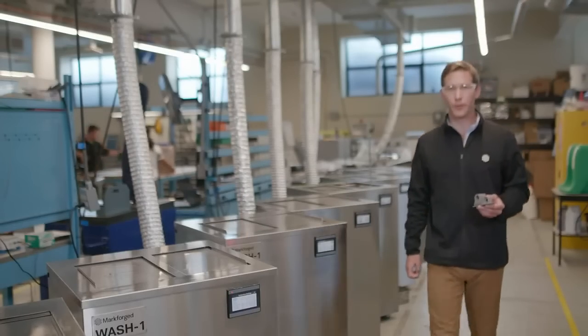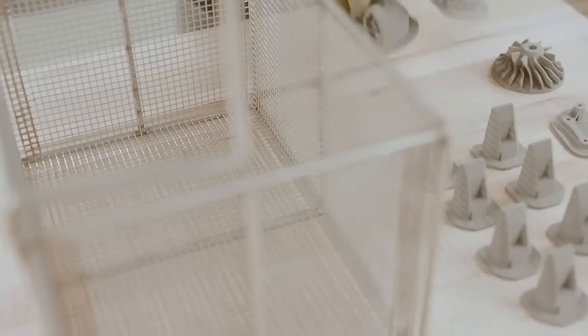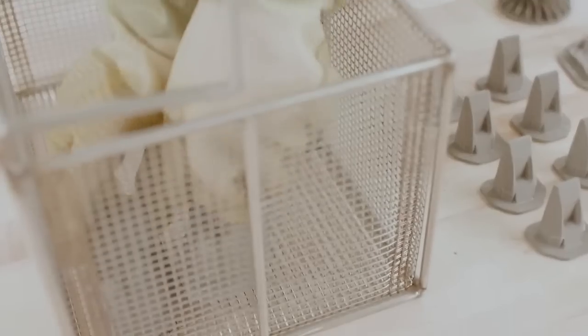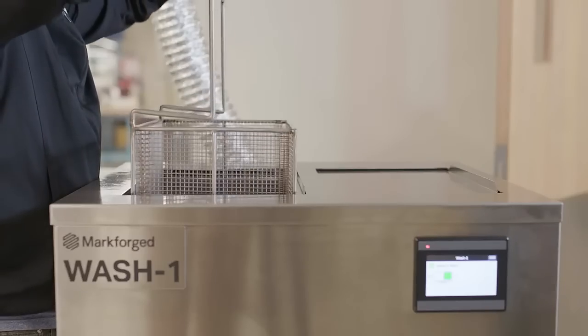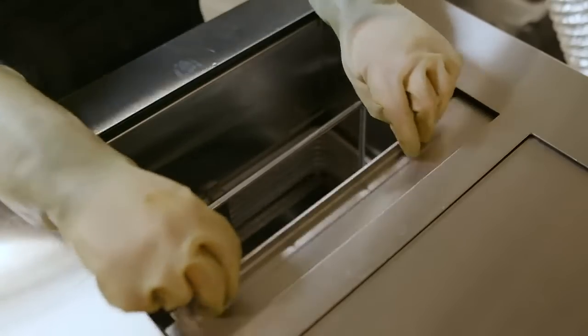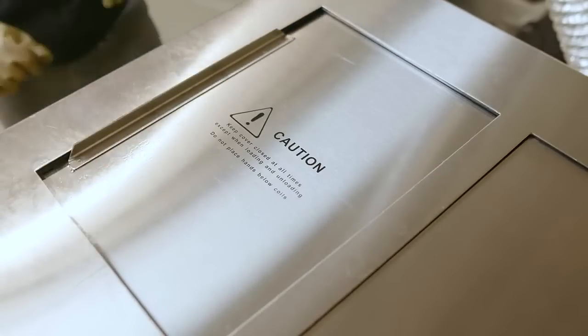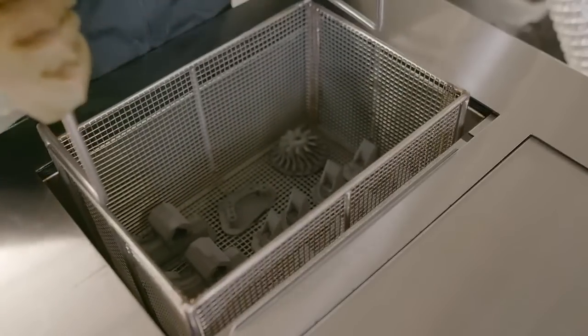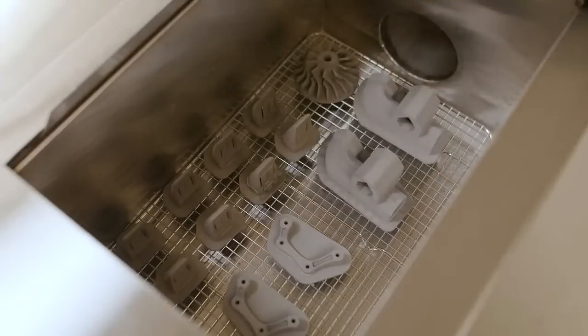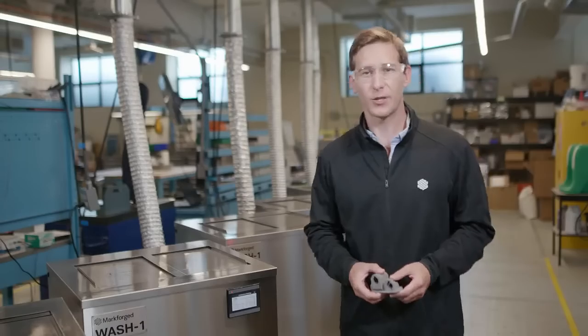The wash one removes the first stage of the binding material. A green part is taken from the printer and placed into the wash basket, which is then lowered into the solvent. Wash times will vary, ranging from a few hours to a few days, depending on the thickest region of your part. After that, it's now called a brown part and is ready for sintering. Let's go over to the furnaces.